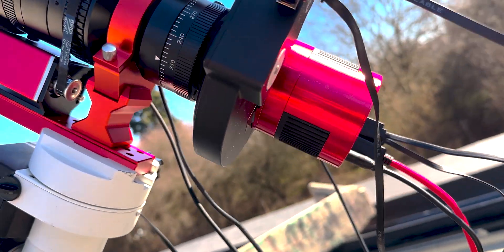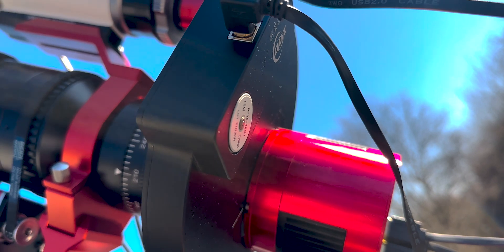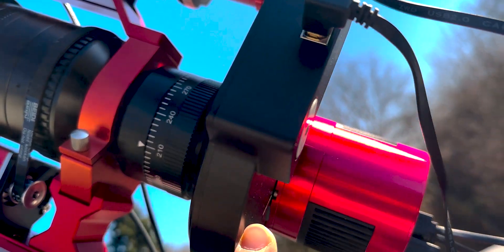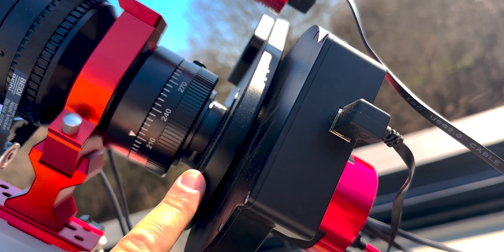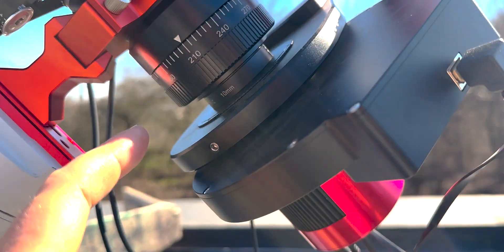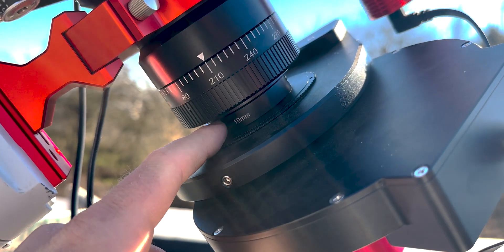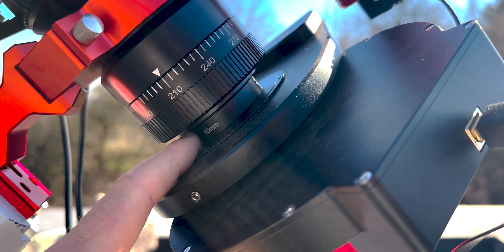So the spacers are essentially the filter wheel, which is right up against the camera, which is 20 millimeters. Then there's the rotator with adapters, which adds up to 18. This gives me 38. And then I have a 10 millimeter spacer from Explore Scientific, which gets me up to 48.